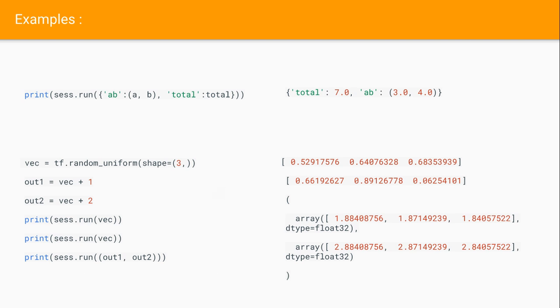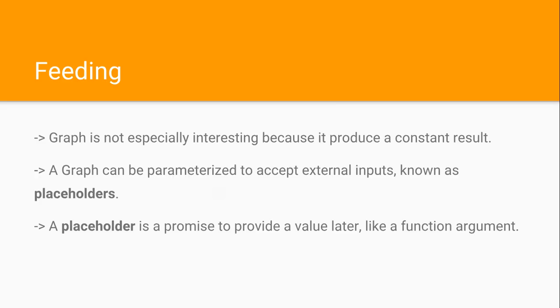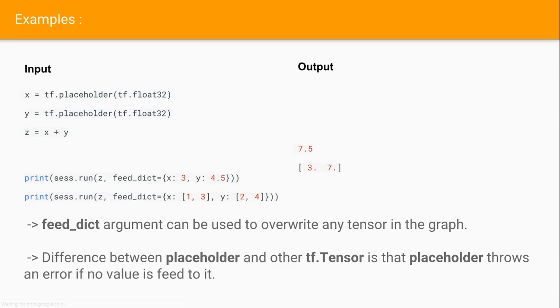Then there is feeding. A graph can be parameterized to accept external inputs with placeholders. Placeholders are a value which you can declare later, like a function argument. You will be using placeholders in TensorFlow many times, so remember this.